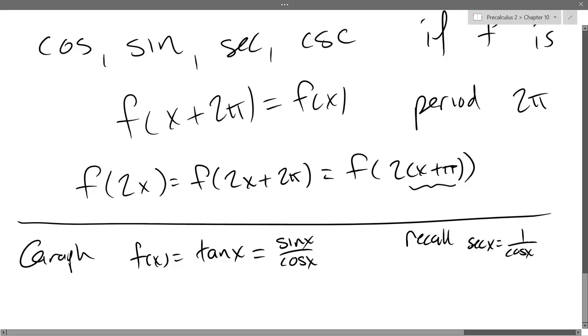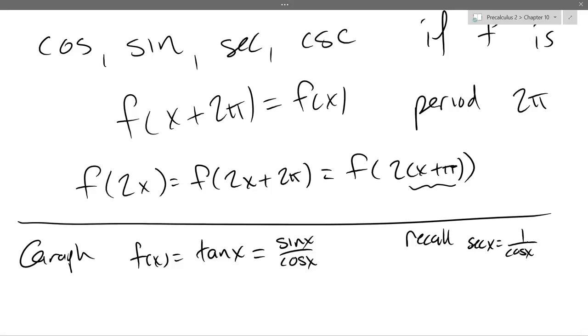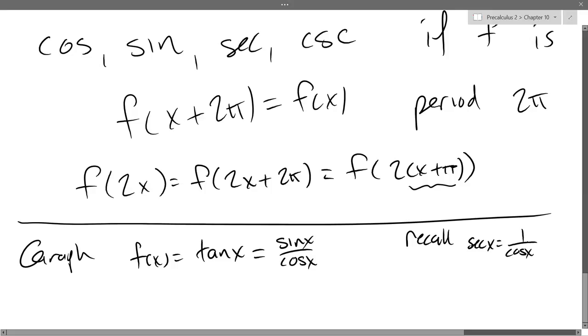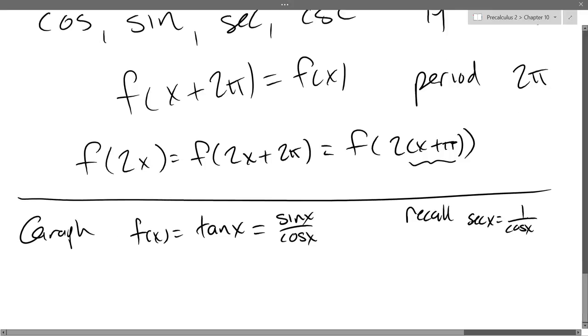So right away, this is going to have similar properties to the secant function. The similar properties it's going to have is the vertical asymptotes are going to be exactly the same. You're going to divide by 0 at the exact same x values, because they both have cos x in the denominator. Of course, the numerator is completely different, so it's not going to have the same graph.